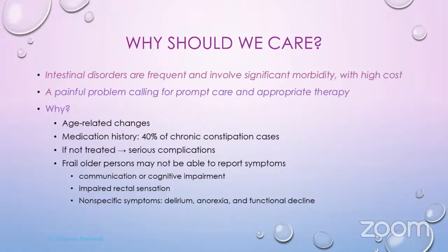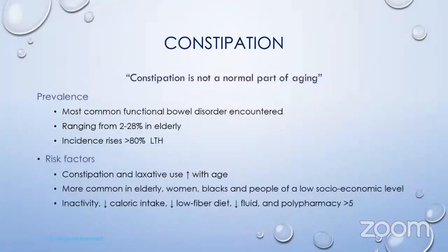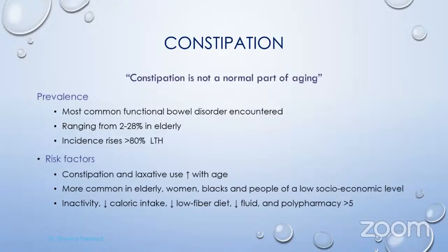The geriatric population — specifically frail elderlies — have issues reporting symptoms, either because of communication or cognitive impairment, and rectal sensation. They present with non-specific symptoms such as delirium, anorexia, and functional decline. Constipation is prevalent and a very common functional bowel disorder among the elderly, up to 30%. In long-term health facilities, incidence rises above 90%. Risk factors include increasing age, female sex, Black ethnicity, low socioeconomic level, inactive lifestyle, decreasing caloric intake, low fiber diet, decreasing fluid, and polypharmacy.